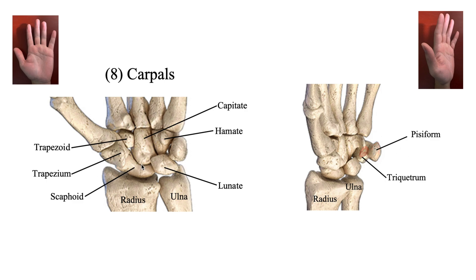So let's go ahead and start labeling these. We have the scaphoid, the lunate, the triquetrum, the pisiform, the trapezium, the trapezoid, the capitate, and then the hamate.